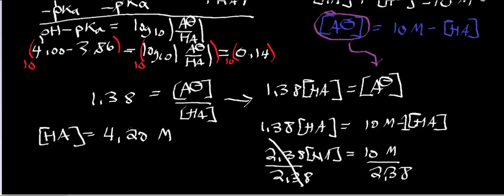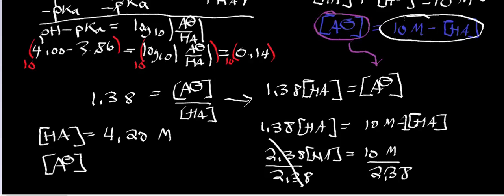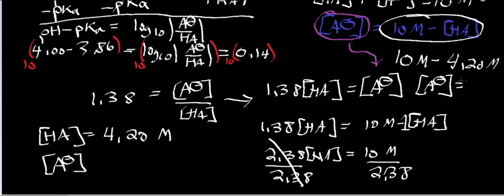The first thing we should do is verify that makes sense by finding the concentration of A-. We said we're at a pH above the pKa, so we expect the conjugate base concentration to be higher. Plugging 4.20 molar as [HA] into the mass balance equation: [A-] equals 10 molar minus 4.20 molar, giving a concentration of A- equal to 5.80 molar.